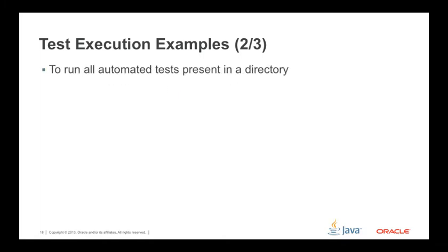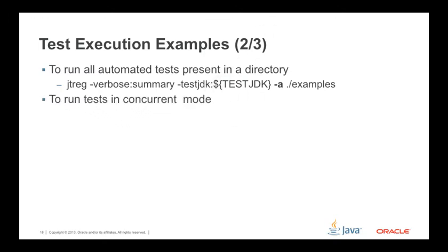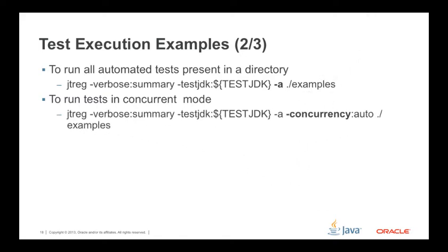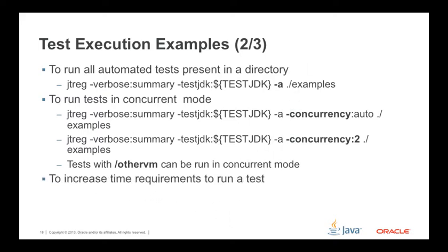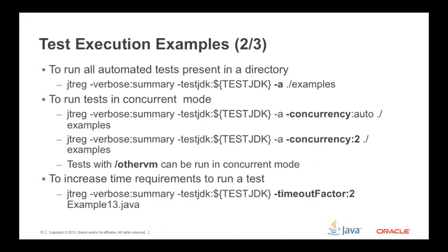To run all automated tests in a directory, use the '-a' option with JTREG. To run tests in concurrent mode, use the '-concurrency' option — the concurrency value can be a number or 'auto'. Note that tests with the same VM option cannot be run in concurrent mode. To increase the timeout requirement for running a test, use the timeout factor option, which is a scaling factor in multiples of 120 seconds.